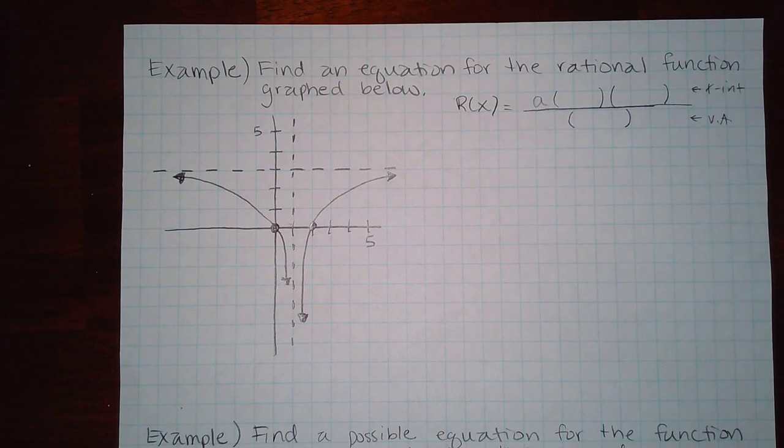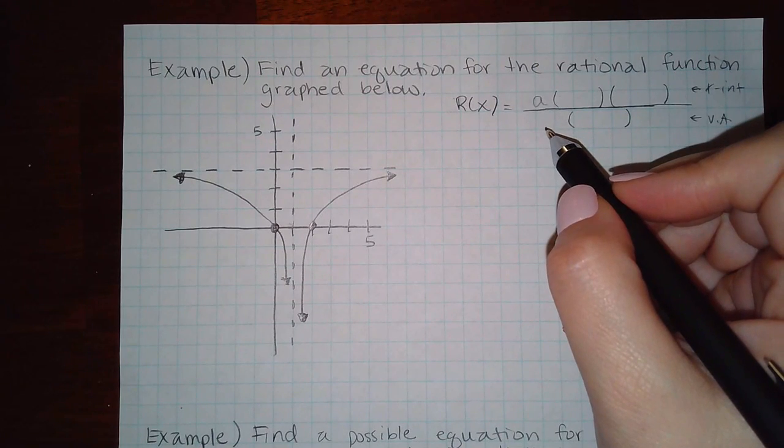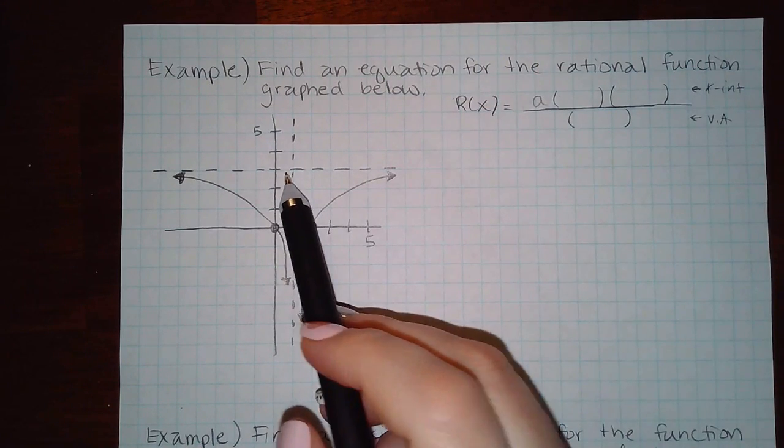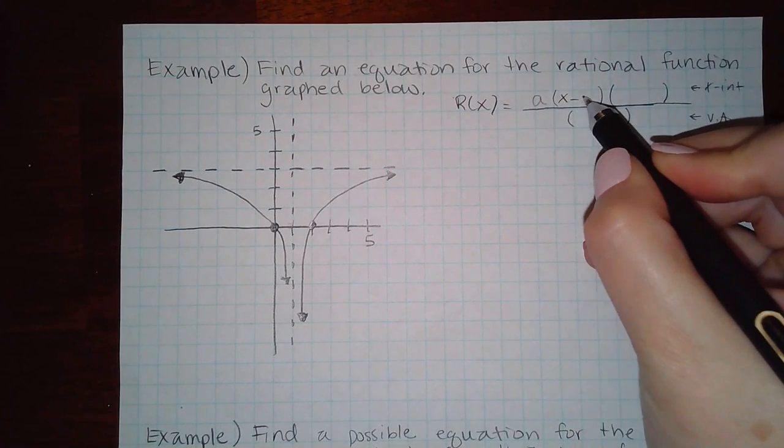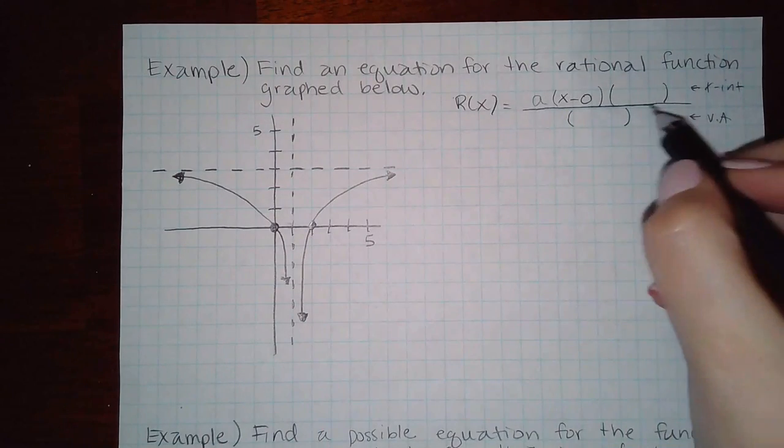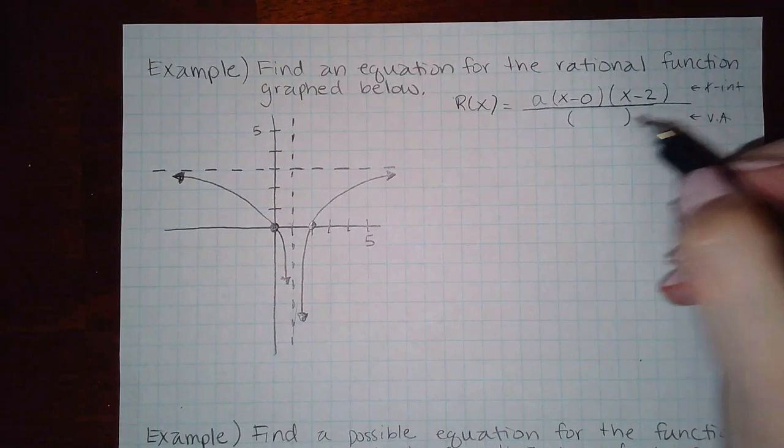That's pretty much all you need for the basics to know what the function is going to look like, and then it's a matter of plugging in the values. Let's do the x-intercepts first. Here we have zero so this would be x minus zero. Here we have two so this would be x minus two, and the vertical asymptote is at one so this would be x minus one.